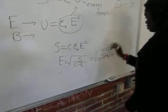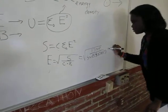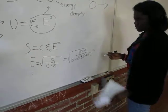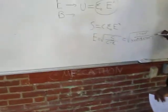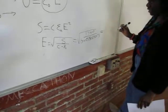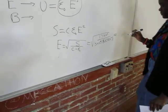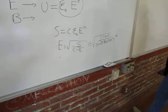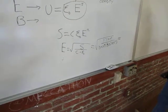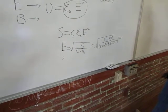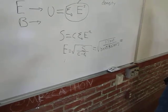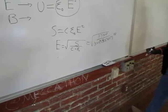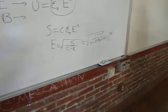So 1.7 e to the 9 divided by 3 to the 8 equals, divided by 8.85 e to the negative 12 equals, then get the square root of all that. I got 8.02 times 10 to the 5.